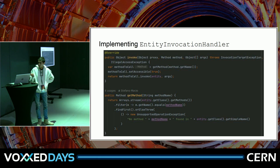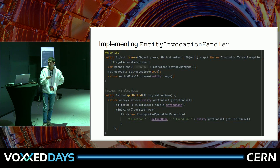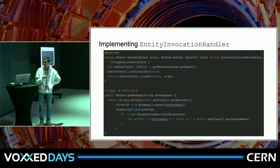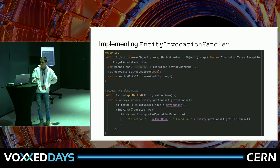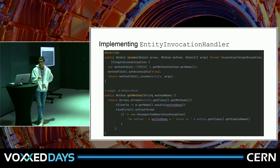The getMethod implementation, as you can see, gets the list of methods as a stream for the entity class, finds the one that is needed, and if it doesn't find it, it throws an exception.